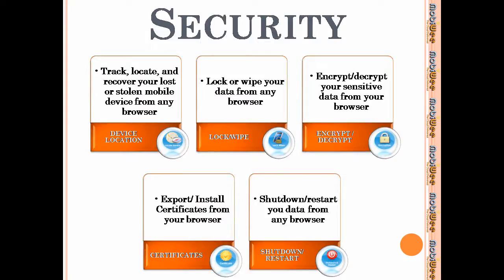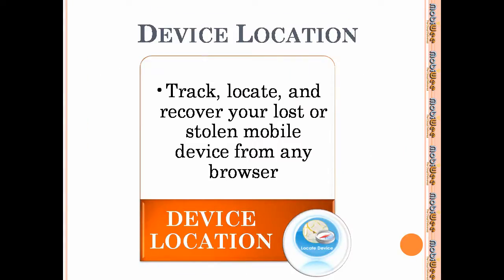Now we're going to talk about security services. We are really proud of what we've done with security here — it's a very simple way to secure your device. We start with device location. Basically, when you click Locate My Device, MobiWee displays the location of your mobile device using the GPS signal on the device. This is great if you are not sure where you have left your phone or suspect it has been stolen.